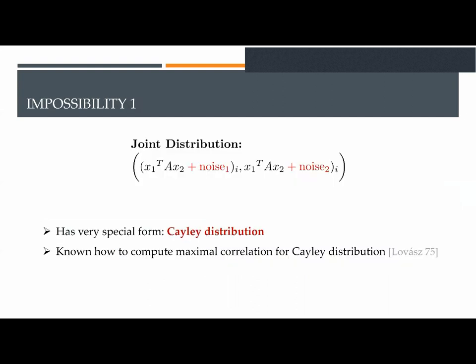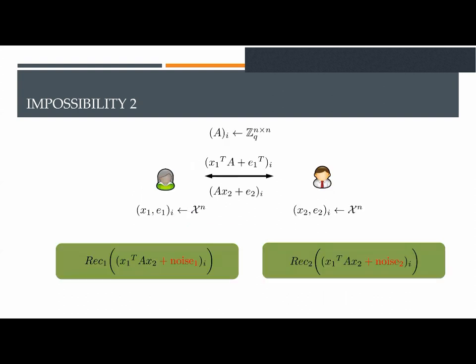In our case, the joint distribution of Alice and Bob is the following. Alice gets x1·A·x2 plus noise, and Bob gets x1·A·x2 plus another noise. This joint distribution has a very special form, which is described through the notion of K-L distribution. And Lovász has shown how to compute the maximal correlation in this special type of distribution. So, we acquire our result using Lovász's result and showing that the maximal correlation in this case is bounded away from 1.